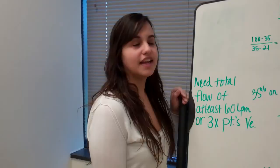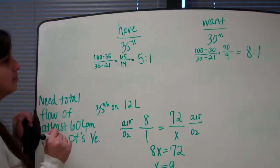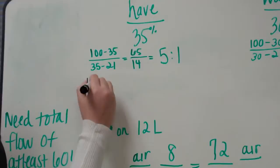I'm now going to show you how to get your total parts for your equation. You're going to need your total parts in order to find out how much oxygen to bleed into the system. So for total parts, you're going to add your air and your oxygen ratio together. So you're going to add 5 plus 1, which equals 6. So your total parts for 35% is 6.